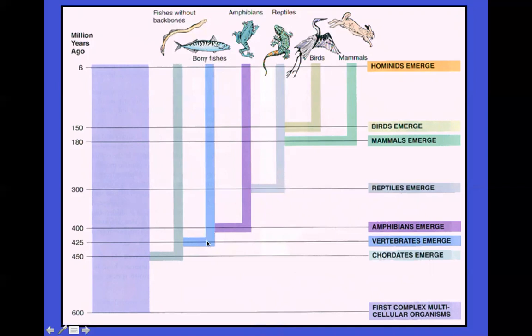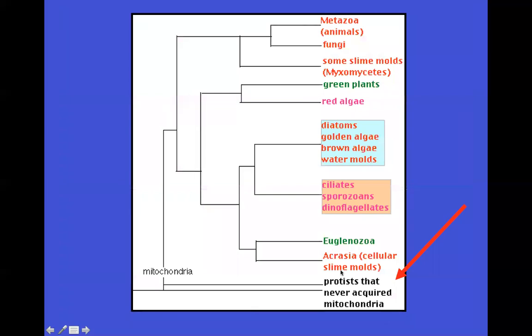Evolution explains how all organisms past and present are related to one another, and that all life is connected and can be traced back to the primeval prokaryotes. Down here you see complex multicellular organisms. Here we can see all of life traced back to these primeval protists, and we see our animals here, plants here, and so forth.